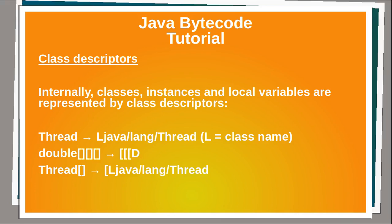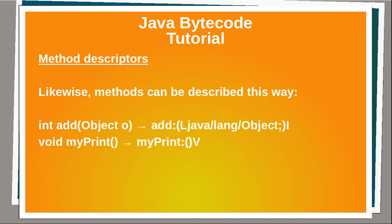Internally, the JVM doesn't navigate through methods and properties exactly as you do. Internally, classes, instances, and local variables are represented by class descriptors. For example, to indicate the class Thread, you write it with no dot and an L prefix. An array of double, three-dimensional, is represented accordingly. Likewise, methods can be described this way. The method 'add' accepts a generic object and returns an integer. The method 'myPrint' doesn't require any parameter and returns nothing.